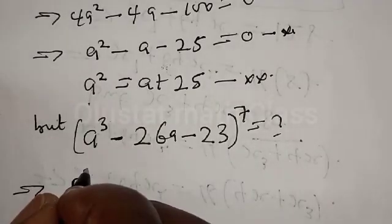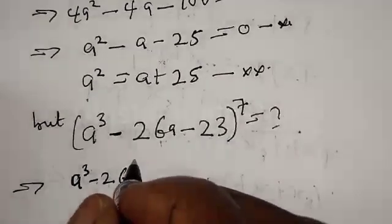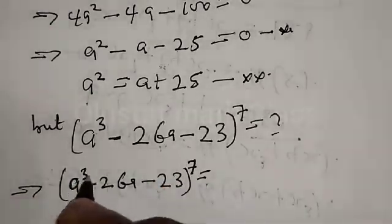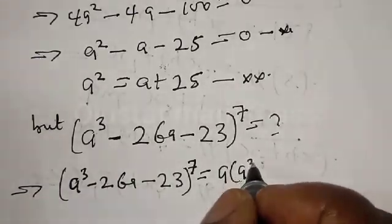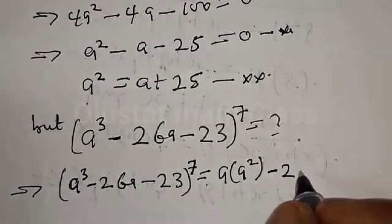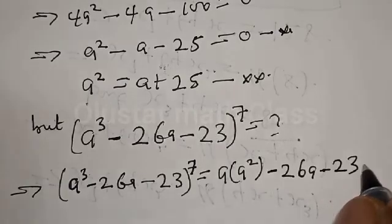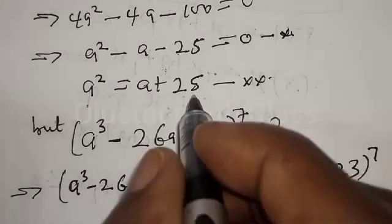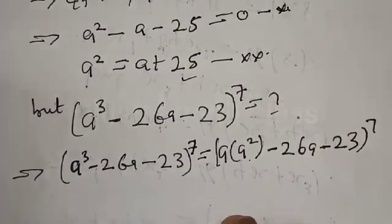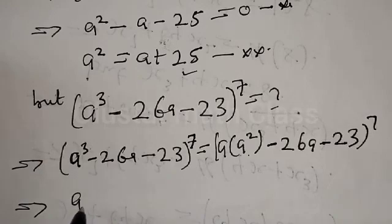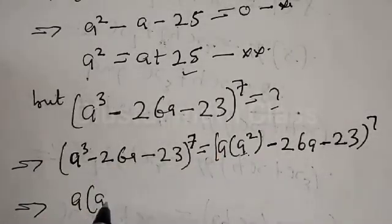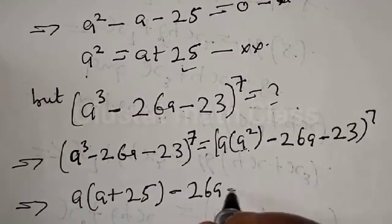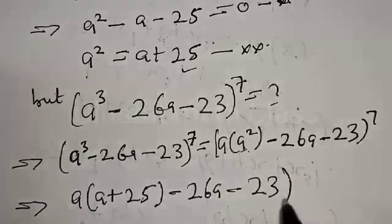We want to find a raised to power 3 minus 26a minus 23, raised to power 7. Now, a raised to power 3 can be expressed as a into a squared, minus 26a minus 23, all raised to power 7. But we know a squared equals a plus 25. This implies that we have a into a plus 25, minus 26a minus 23, all raised to power 7.